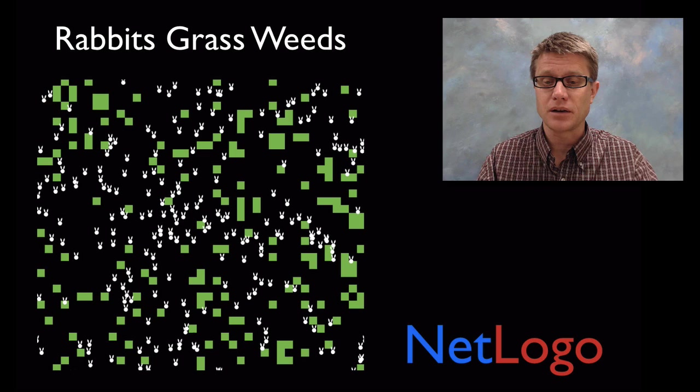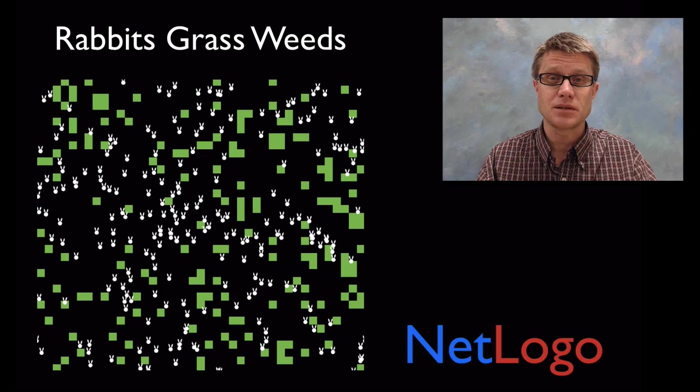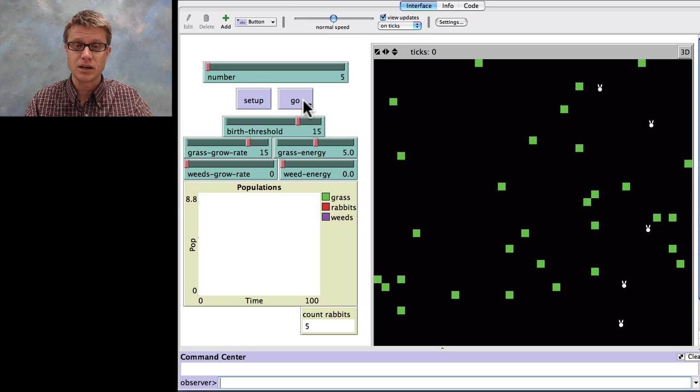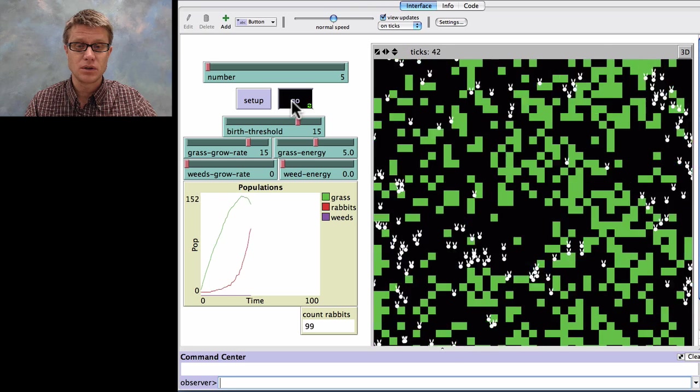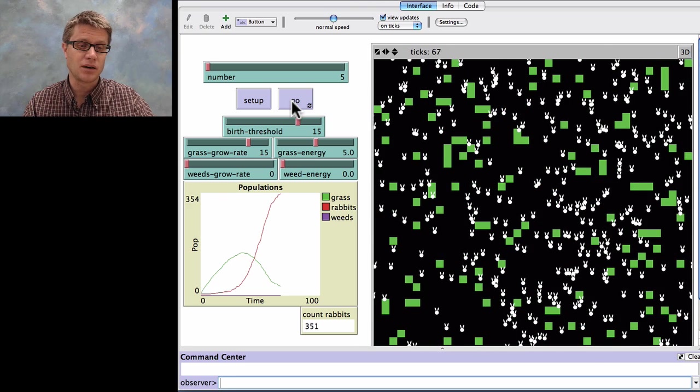Now let me show you another model. This is a NetLogo model called rabbits, grass and weeds. So let me launch that for a second. So in this model the rabbits are going to be these little white things with ears. And then the grass are going to be these little green squares. And so we start with five. Now the rabbits are going to find grass if they can. And if they can they're going to get energy. And if they get enough energy they can breed. But if they don't find enough grass then they're going to die. And so if we let it go for a second it goes really quickly.